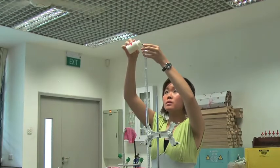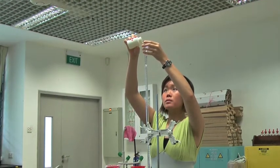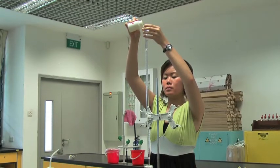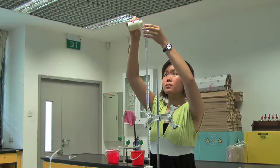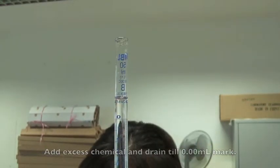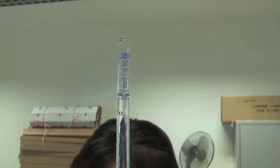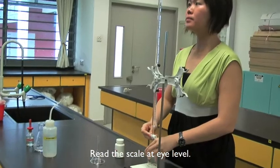Transfer the chemical into the burette using a funnel. Add excess chemical into the burette to above the 0 cm³ mark. Then, run this chemical to the 0 cm³ mark.